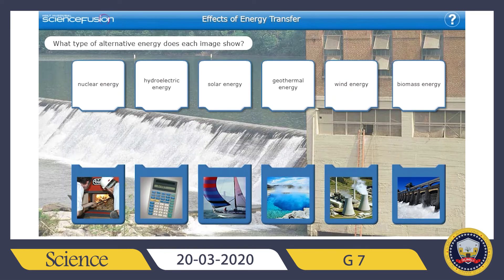Now let's try to solve an exercise. What type of alternative energy does each image show? We have nuclear energy, hydroelectric energy, solar energy, geothermal energy, wind energy, and biomass energy. While matching these, try to remember what each type of energy is and what the advantages and disadvantages of each energy type are.